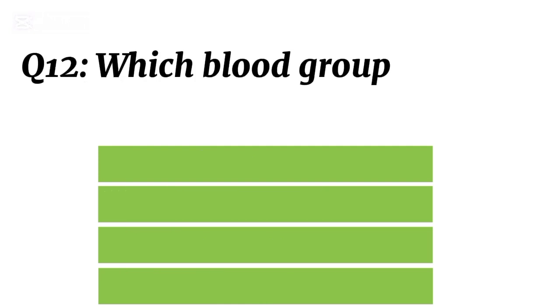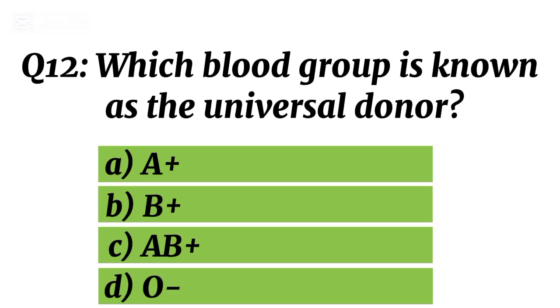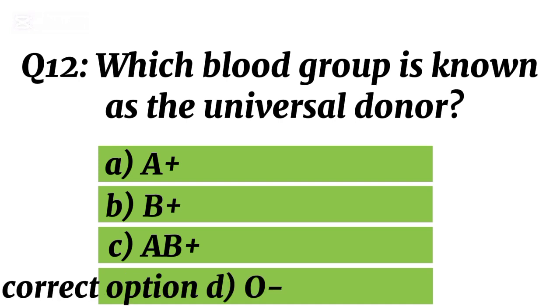Question 12. Which blood group is known as the universal donor? Correct option D. O-.